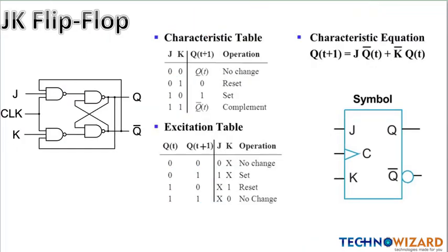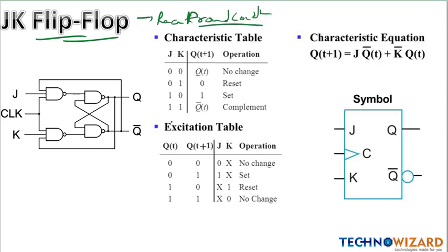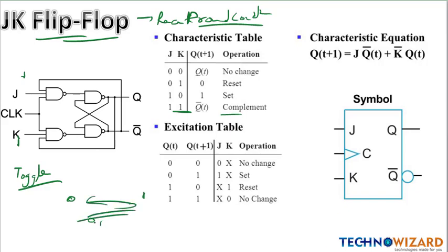Next is the JK flip-flop. In this there is one problem — the race-around condition. Race-around condition occurs when J=1 and K=1 in the JK flip-flop, giving a toggle condition where the output toggles between 0 and 1 continuously. We get a complement output every time. This is known as the toggle condition and is also called the race-around condition.